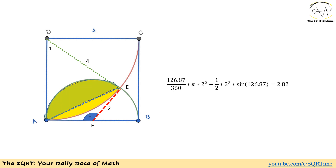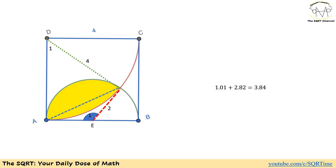Finally, the area marked in yellow can be calculated as the sector area minus the triangle area for both sections, which is 1.01 plus 2.82, giving us around 3.84. And that's our final answer.